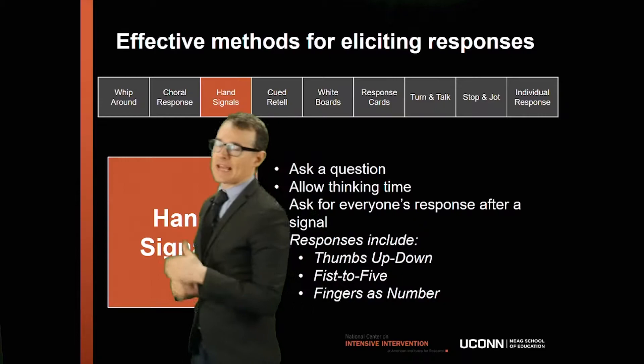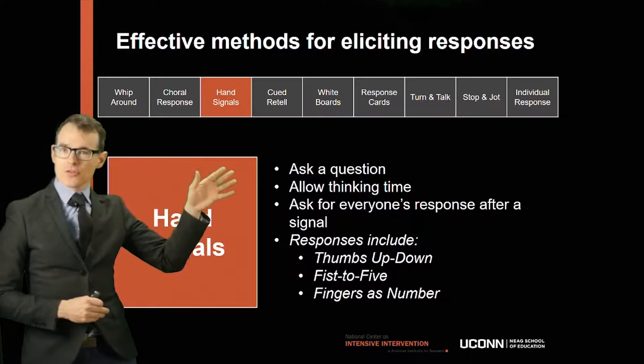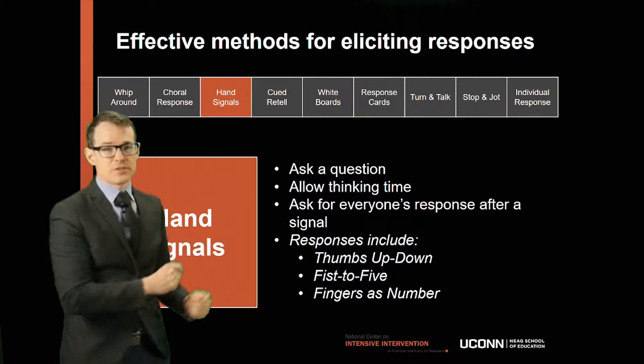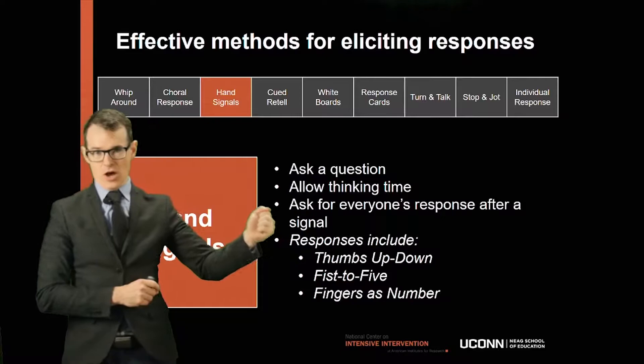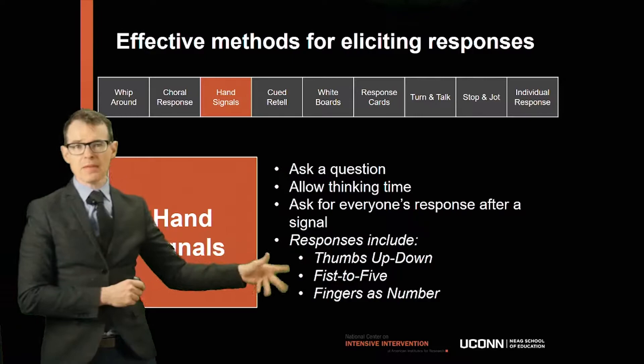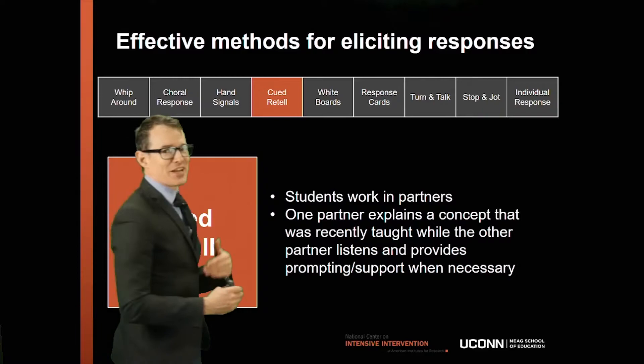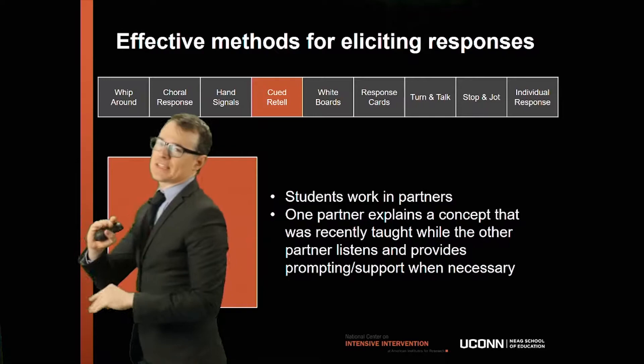Choral response is a great way to get all students engaged at one time, though it works for certain kinds of responses—a point we'll come back to. Hand signals are another great way to get all students involved simultaneously. You ask a question, allow thinking time, then give a clear signal for students to respond. You can do thumbs up, thumbs down, or fist to fives—fist meaning 'I don't understand at all' and five meaning 'I have complete understanding.' Students can also hold up fingers as numbers corresponding to multiple-choice answers.